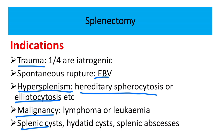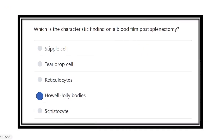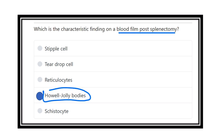Other indications include splenic cyst, hydatid disease, or splenic abscess — in these conditions splenectomy is usually done. So the answer to the question — what is the blood film finding post-splenectomy — is the Howell-Jolly body.